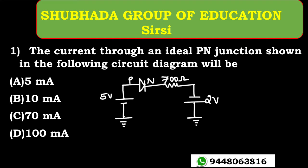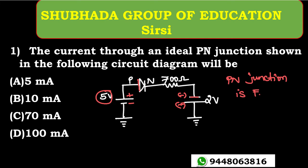We need to calculate the value of the current flowing through the PN junction diode. Here, 5 volts is applied at the positive terminal and it is connected to the P-type. This is the negative terminal connected to the N-type, so clearly the PN junction is in forward biased condition.